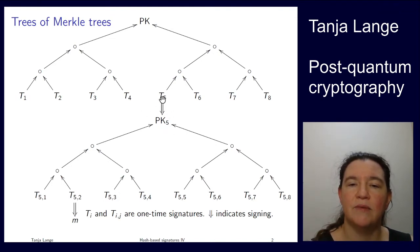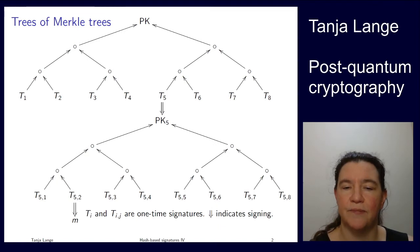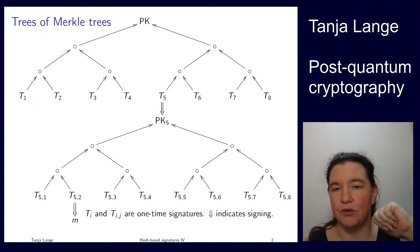So here the one-time signature T5 is used to sign the public key of this second level tree. And then down here we have one-time signature again, and those are then used for the message. Or, of course, if you have more space on your slides, then you can also have multiple levels of trees.